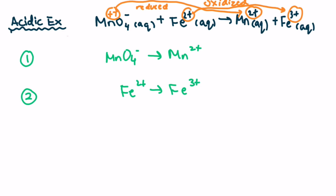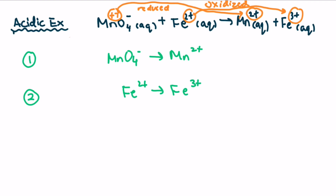Now that we have our two half-reactions, let's balance all the elements except hydrogen and oxygen. Mn is balanced on both sides of equation one. So we're good there. And so is equation number two, because we have the same number of moles. Next, let's balance all the oxygens by adding H2O to each side of the equation. We have four oxygens on the left side, so we add four H2O on the right side. Now we have four oxygens on both sides. For equation two, we have no oxygen, so we are good.